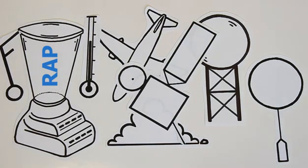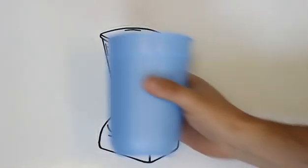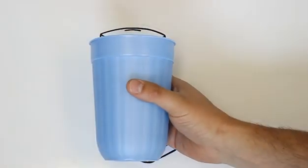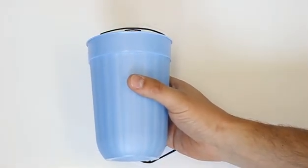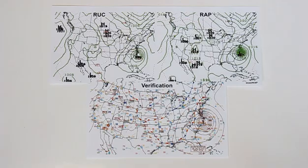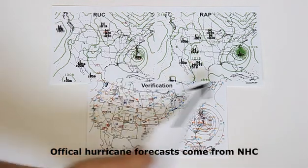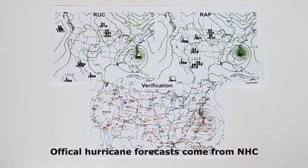Twice a day, you'll get an extra boost with GFS initial conditions marinated in RAP for 6 hours. Blend. And in the blink of an eye, you've got a calorie-burning, muscle-building jumpstart to your model day with improved initial conditions in those hard-to-reach areas. Here's the before and after of MSLP from Hurricane Irene. Look at that tighter gradient!